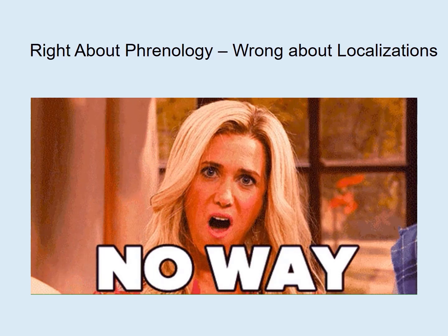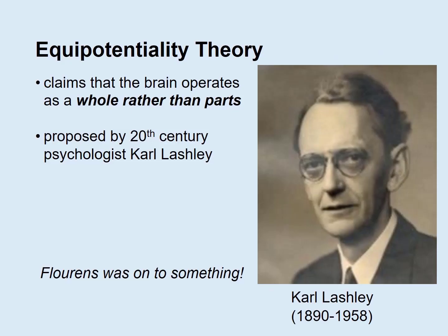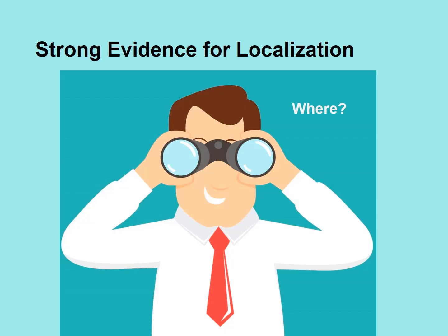Pierre Flourens was right about phrenology — it was bunk — but he ended up being wrong about localization. His view has not totally gone away; in the 20th century, Carl Lashley promoted the same idea, calling it the Equipotentiality theory. It is now the case that most people believe there is strong evidence for localization.